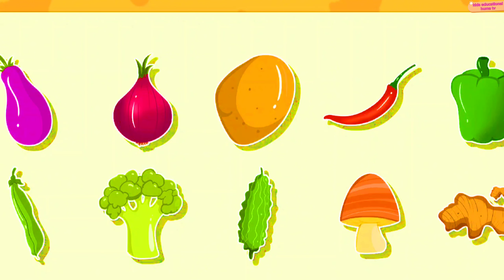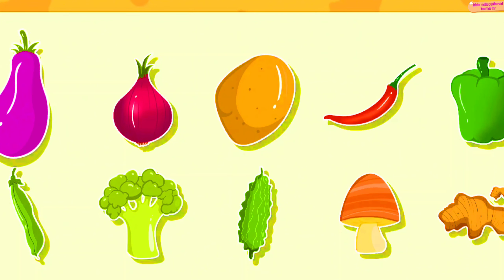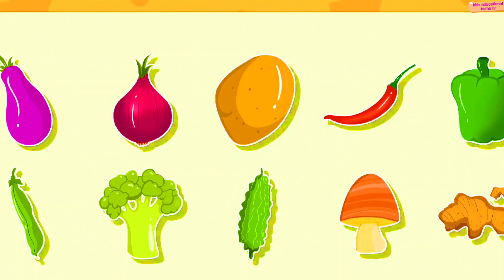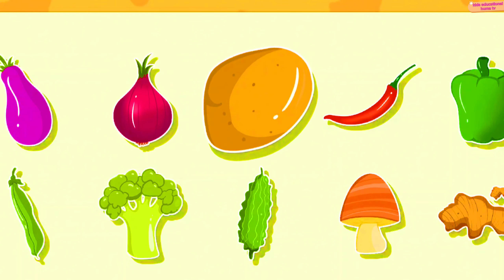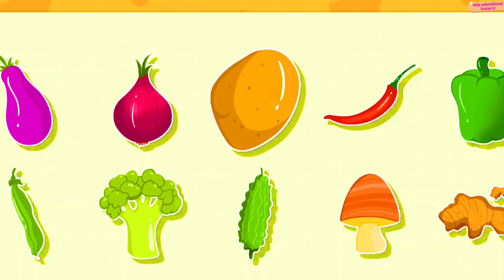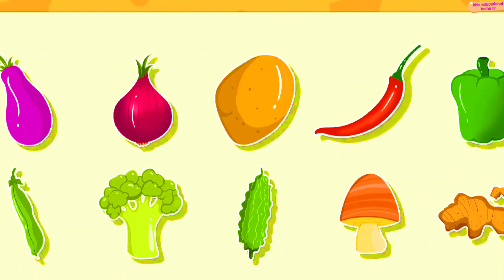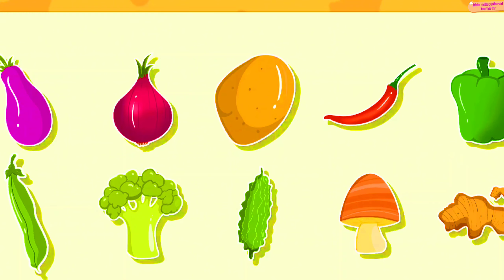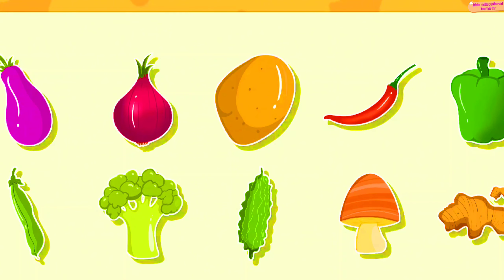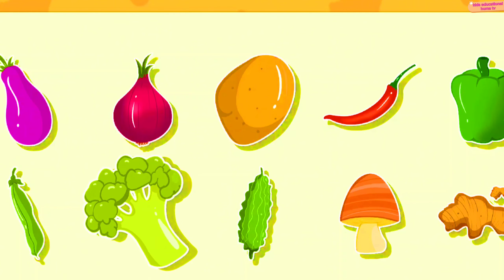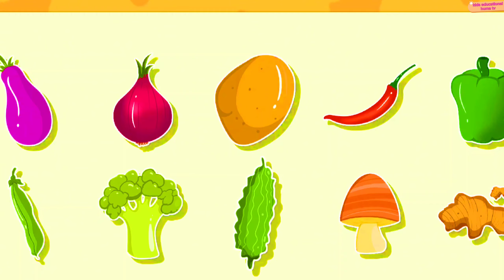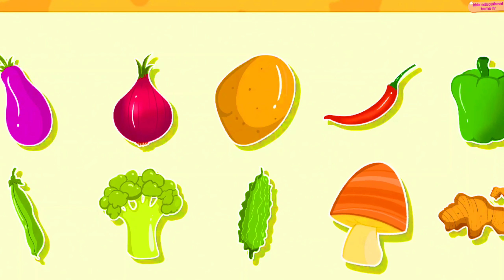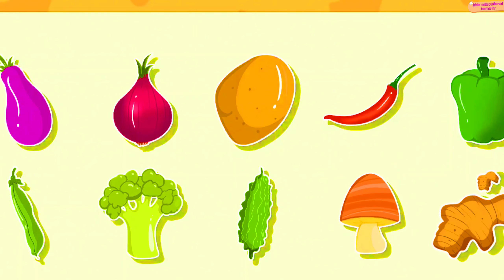Vegetables: Eggplant, Onion, Potato, Chili, Capsicum, Peas, Broccoli, Bitter gourd, Mushroom, Ginger.